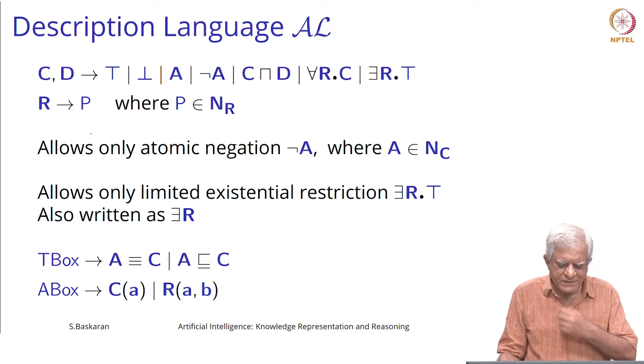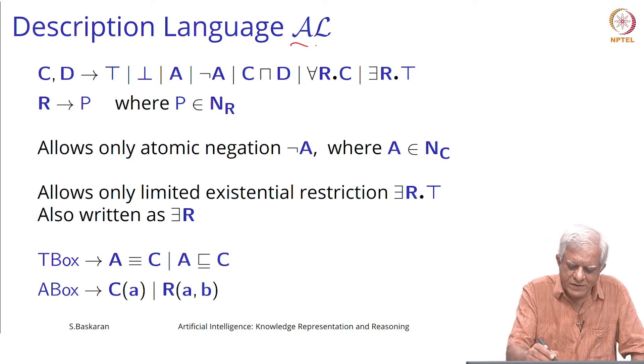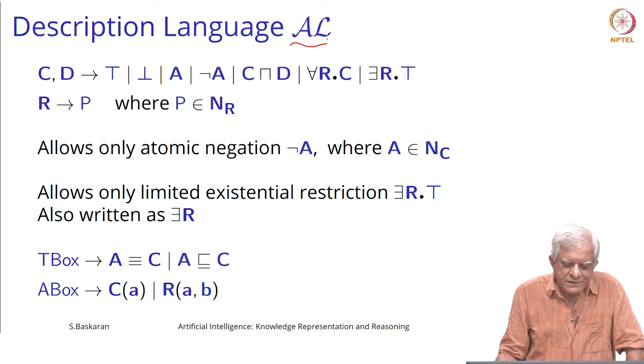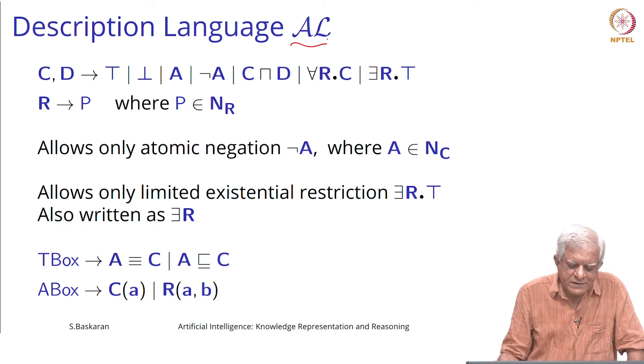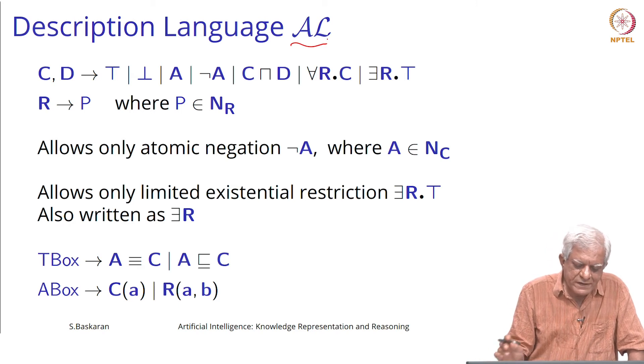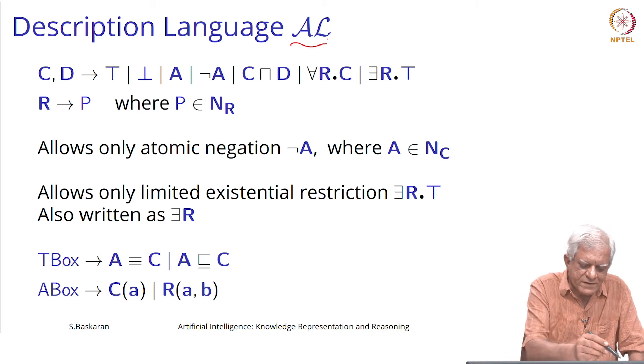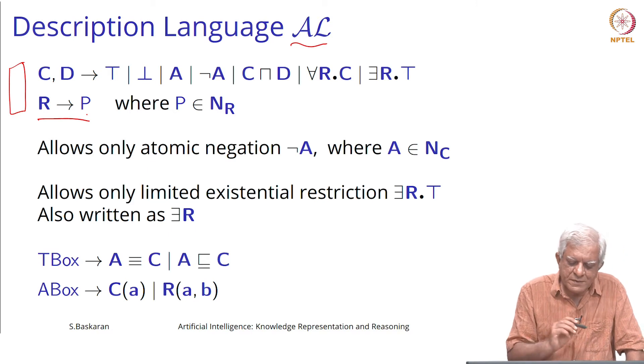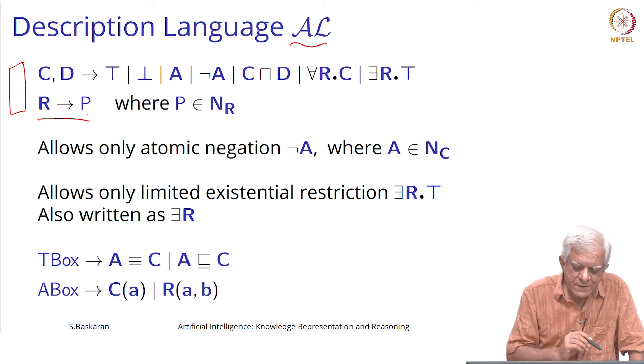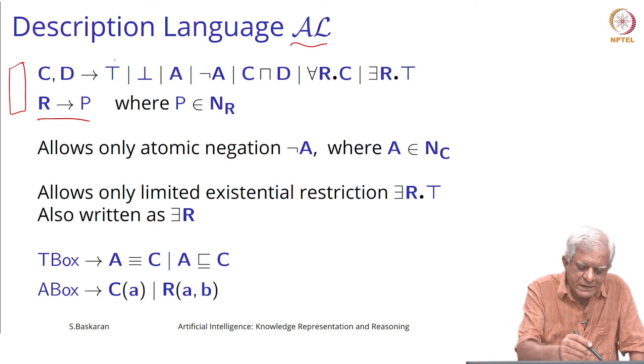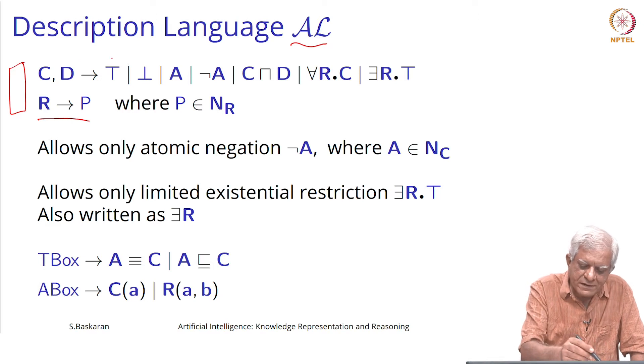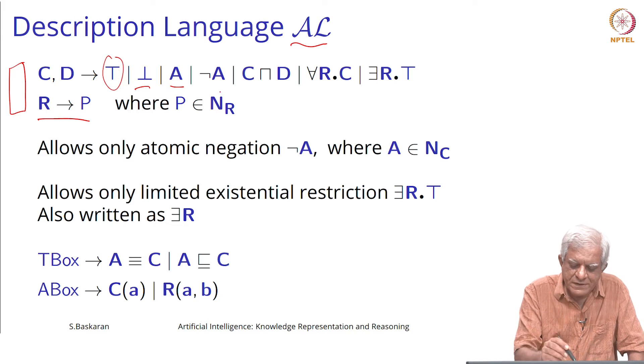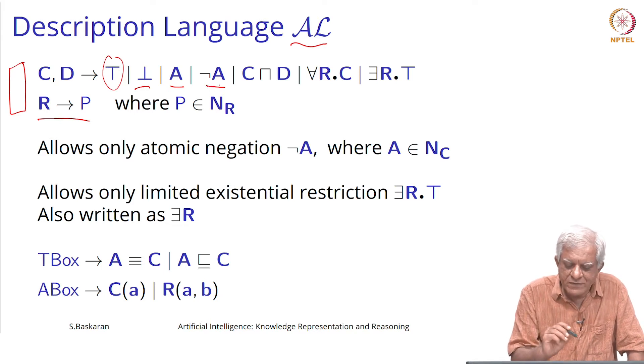The simplest language as we said was the attributed language AL, and it is described here in the top. You work only with primitive rules and concepts in AL can be the top concept, the bottom concept, the primitive concept, the negation of a primitive concept.